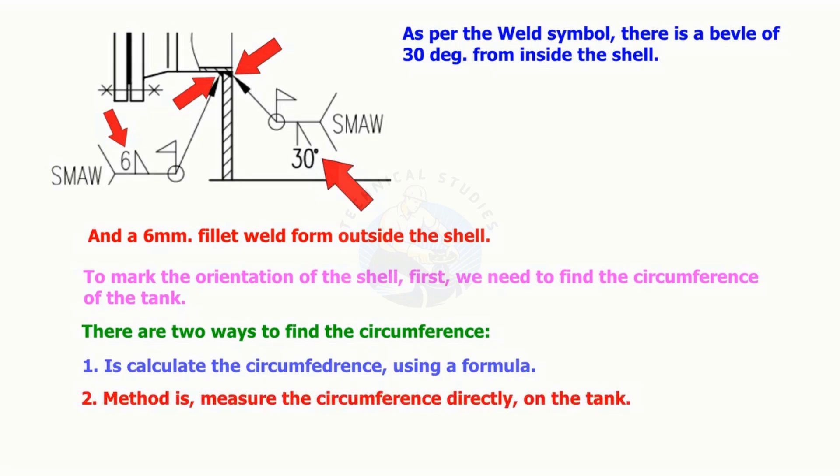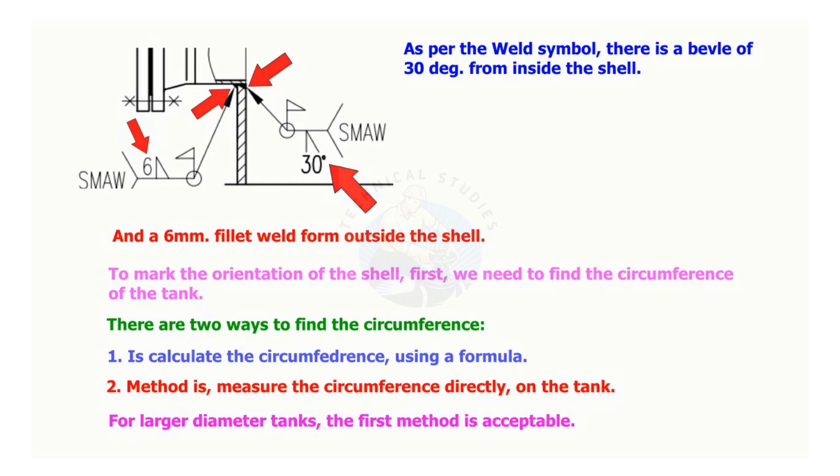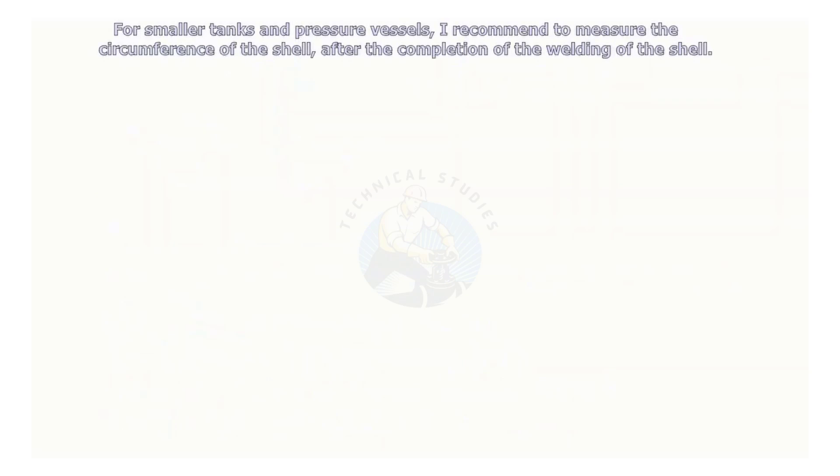For large diameter tanks, the first method is acceptable. For smaller tanks and pressure vessels, measure the circumference of the shell after completion of the welding.